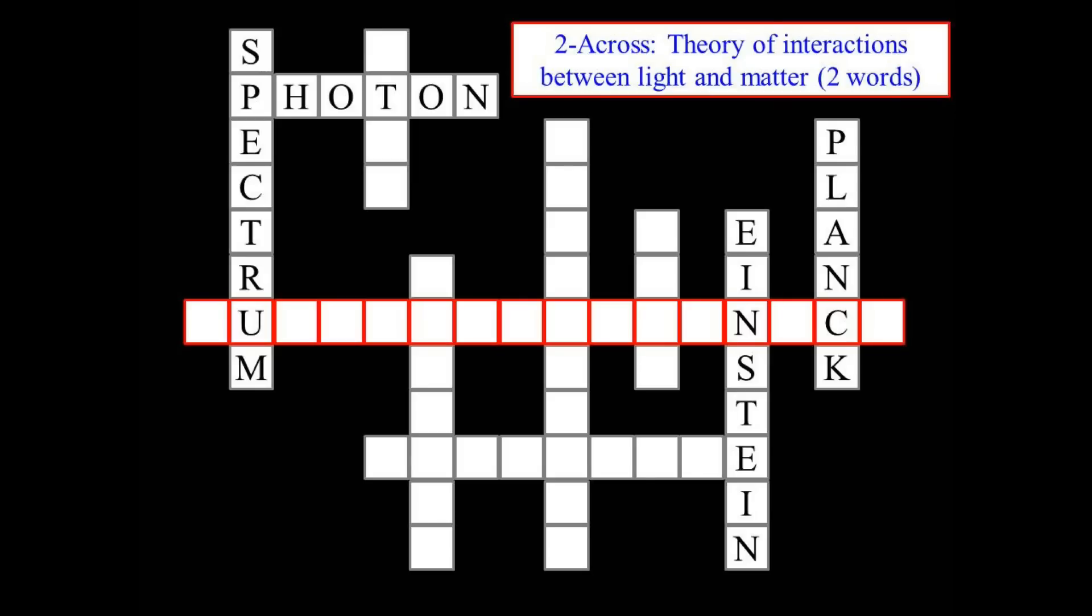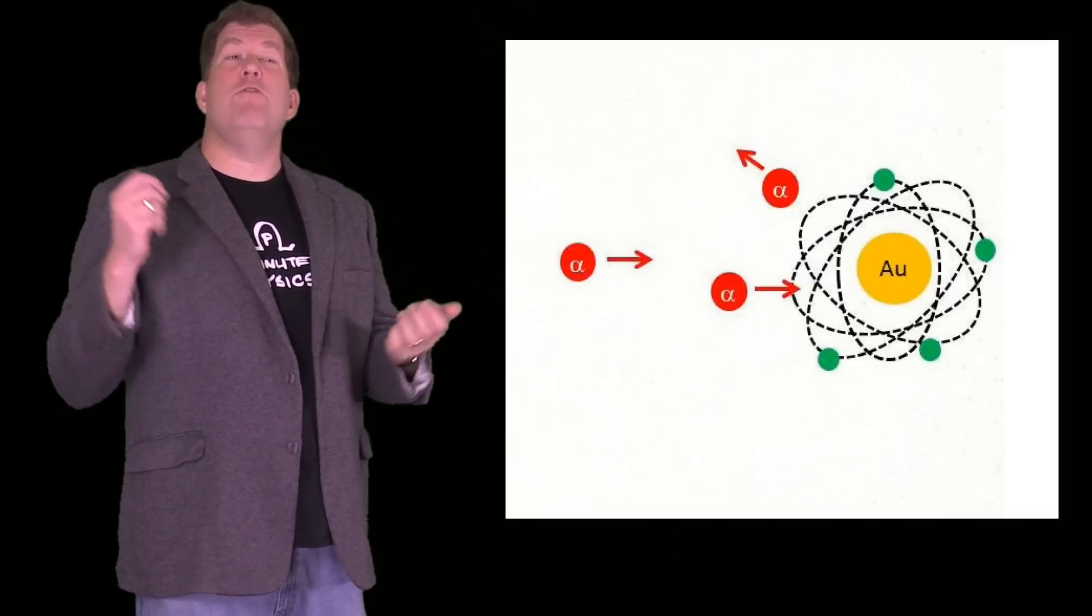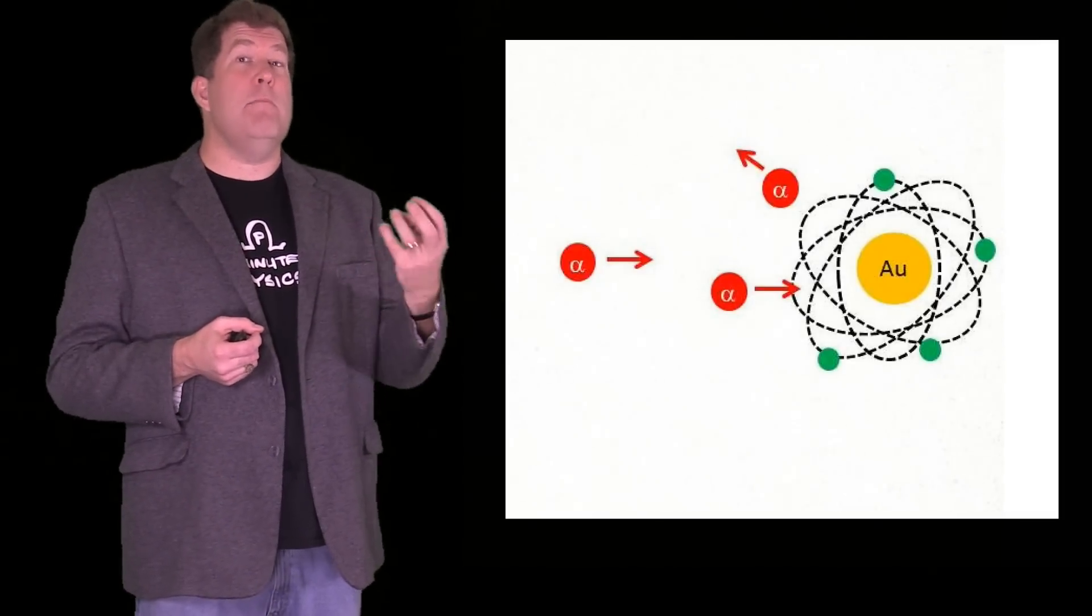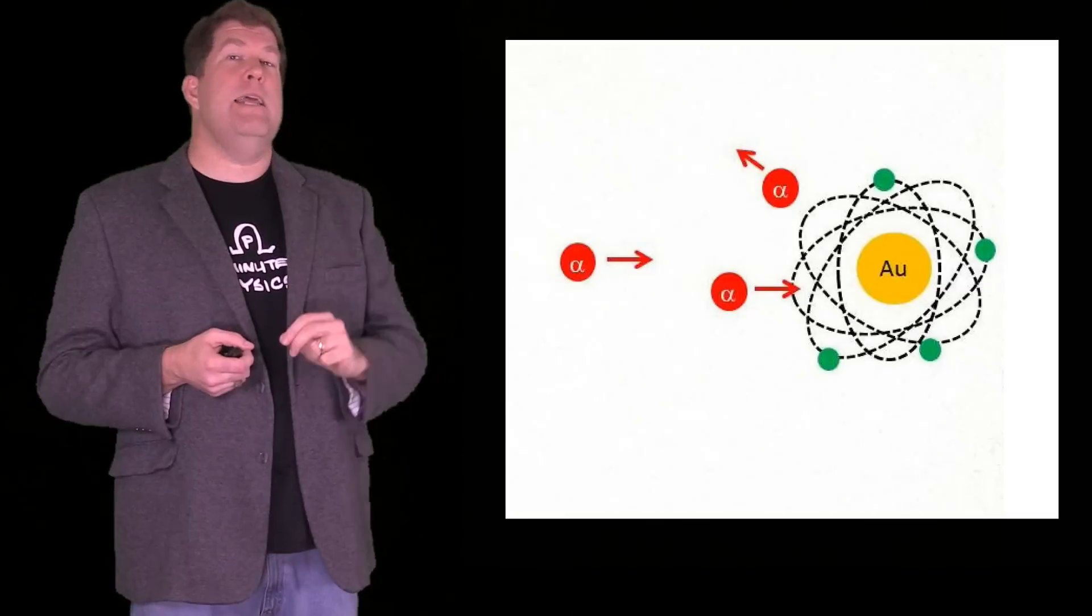So those are the first two steps towards the dual nature of everything in the universe. The next piece comes from Ernest Rutherford, working in Manchester. Ernest Rutherford and his students were shooting alpha particles at gold atoms, and they were shocked to see that some of the alpha particles bounced almost straight back. The only way this can happen is if the vast majority of the mass of the atom is concentrated in a tiny little space at the center.